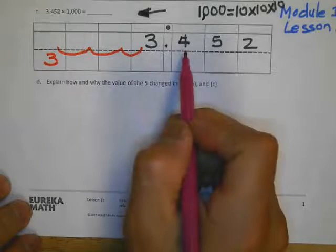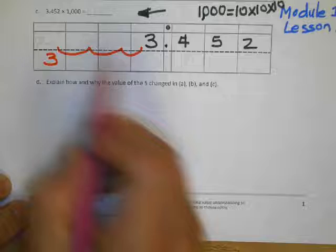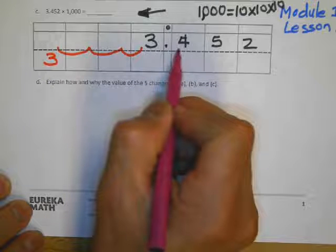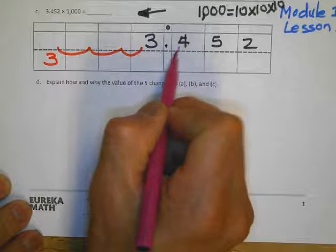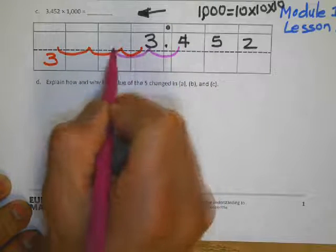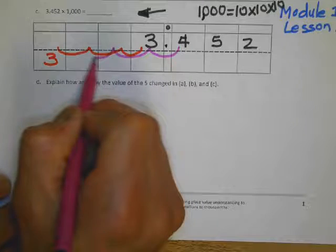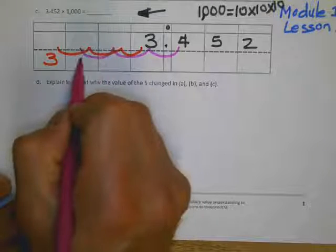which is four tenths, we're gonna multiply by one thousand again and it's gonna move to the left three times. That's one ten, two tens or hundred, three tens is one thousand. So that's four hundred.